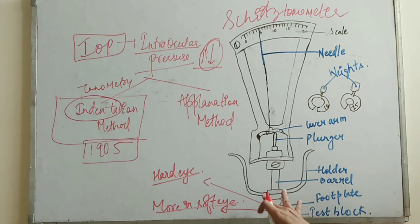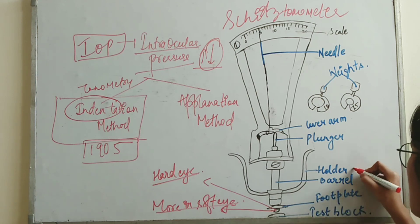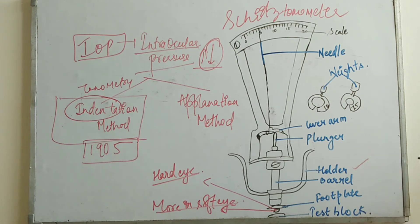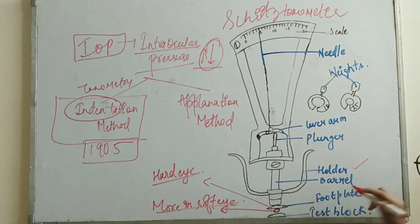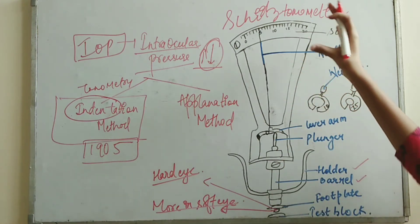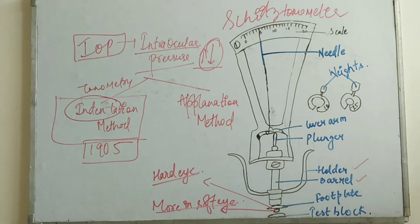The first thing we need to understand is what is the supporting structure in the Schiotz tonometer. The supporting structure is a holder. You can say this as a barrel also. You can say this as a holder which is handling the Schiotz tonometer. This holder has a barrel. The barrel is having more parts of the instrument in the Schiotz tonometer.